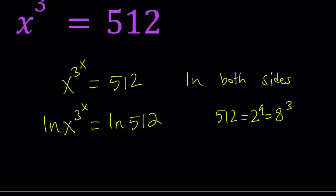So there's different ways to write it using powers. Now, what can I do using properties of ln? We can go ahead and bring this down. So we get 3 to the power x times ln x equals ln 512. At this point, it's not clear what the x value is.